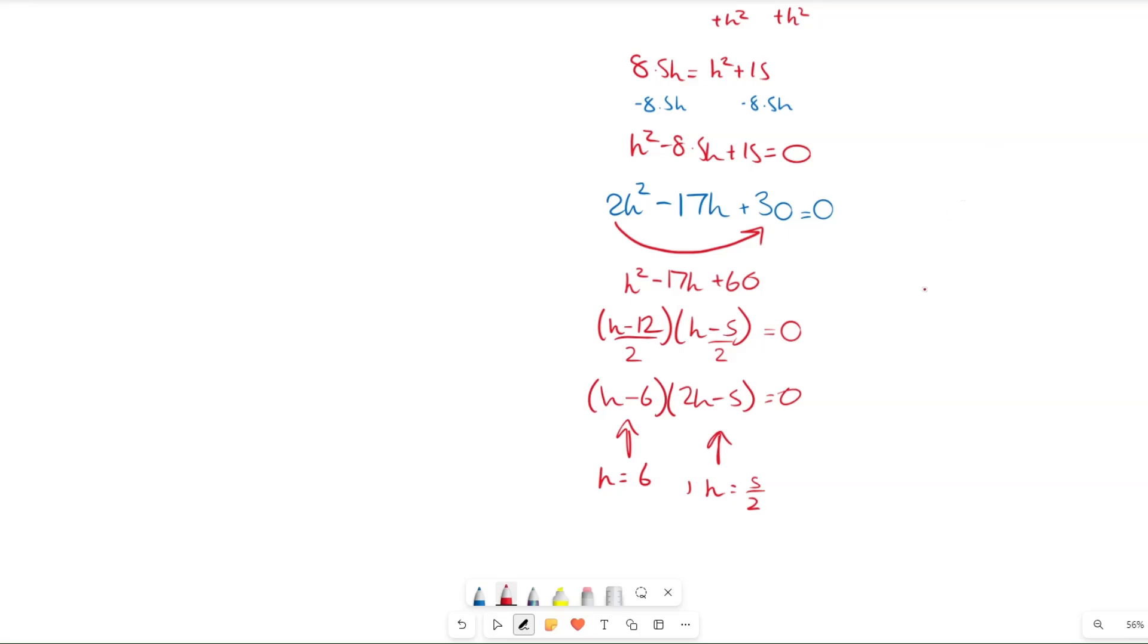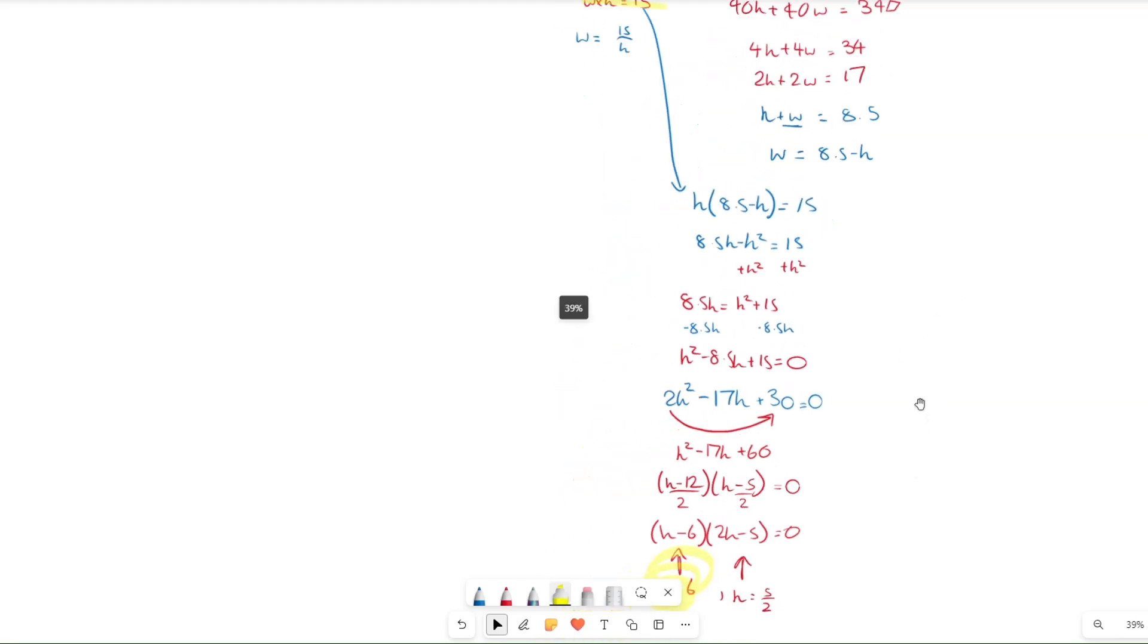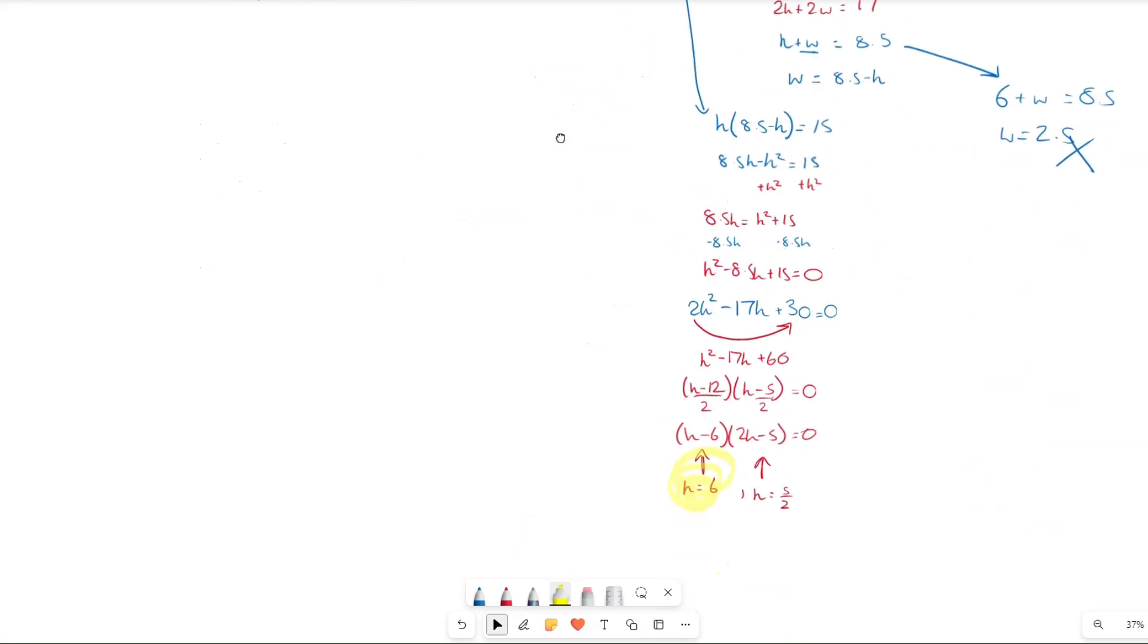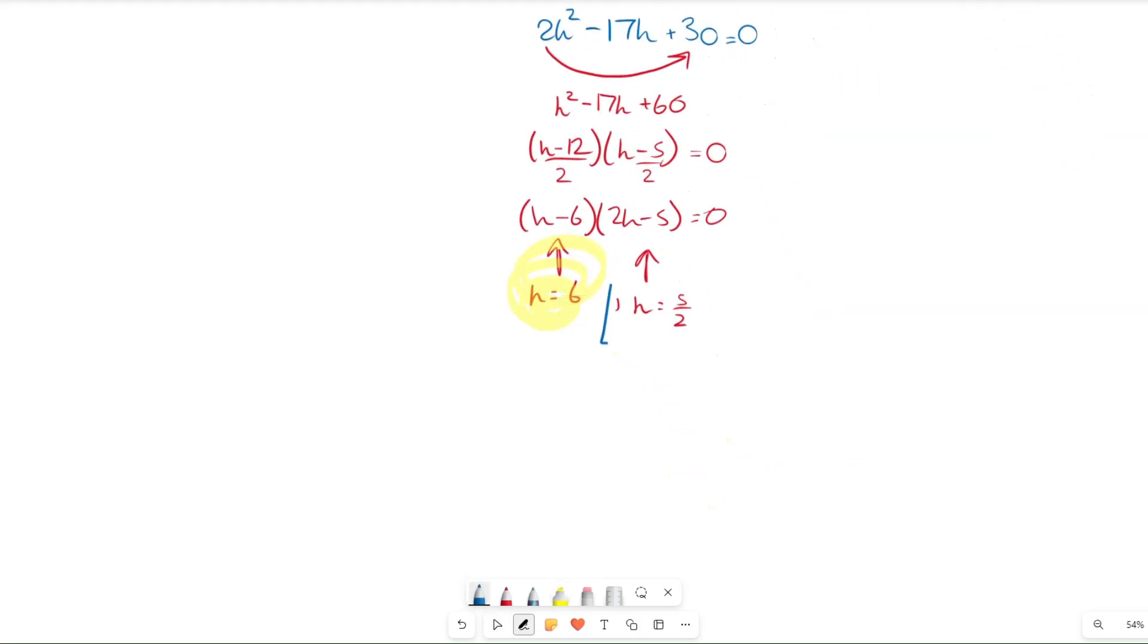But if we look at one of these solutions, let's say look at h equals 6. Since we know that h plus w have to equal 8.5, if we have h as 6, 6 plus w equals 8.5, that means w would equal 2.5, but that can't be true, because the width is greater than the height. So that means our height has to be 5 over 2, and that is our final solution.